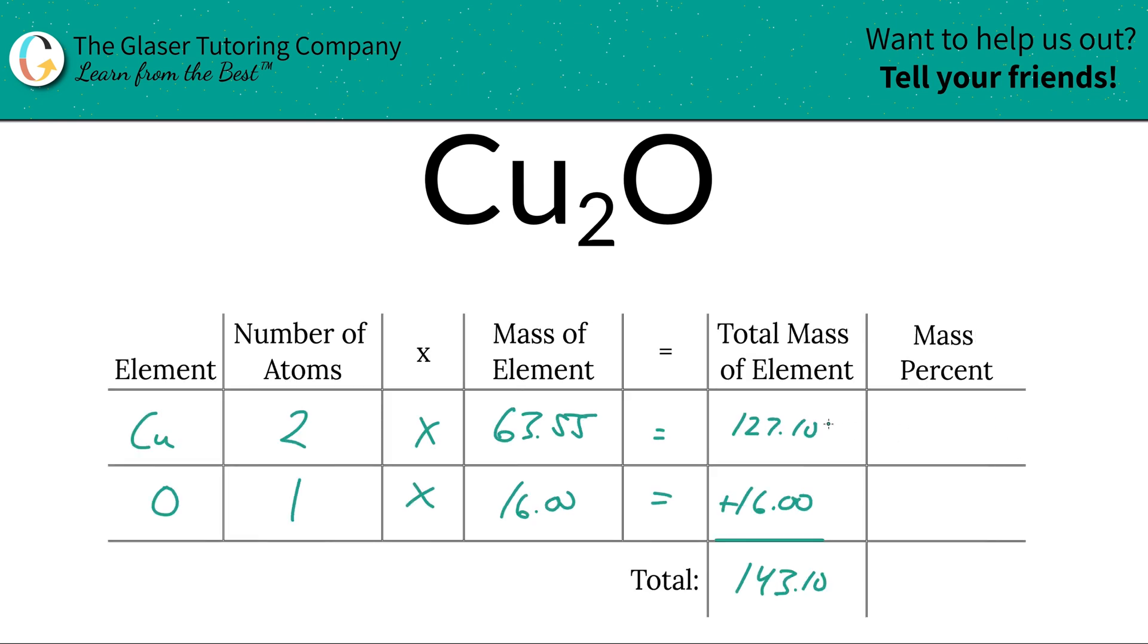So to find the mass percent or the percent composition of copper, we're going to take the total mass of the copper and then divide by the total mass of the entire compound. So there's going to be 127.10 divided by 143.10. And then you're going to multiply that by 100. That's a simple percent calculation. It's part over whole times 100. And when you do that, we're going to arrive at a percentage of roughly 88.82%. And that's the percent of copper in copper oxide.